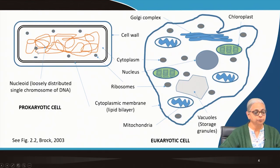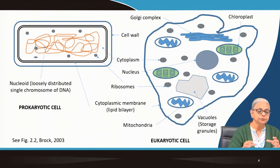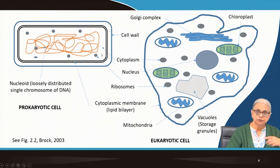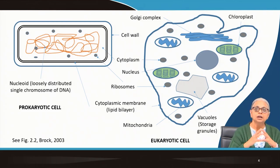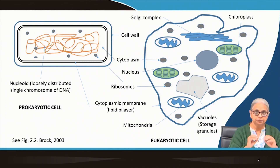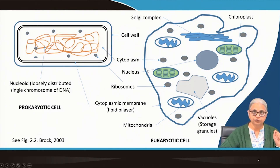This is called the nucleoid because there is no nuclear membrane separating the DNA from the rest of the cell. Here we have the cytoplasm — everything inside the plasma membrane. You have ribosomes, the small grey structures, which are the site of protein synthesis, and you have the DNA. The DNA is not compactly folded; it is free-floating inside the cytoplasm and there is no well-defined nucleus. These are the simple characteristics of a prokaryotic cell.